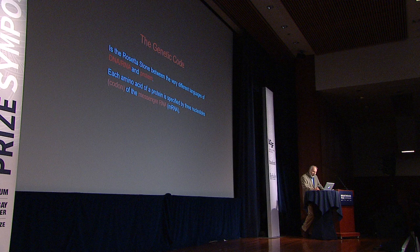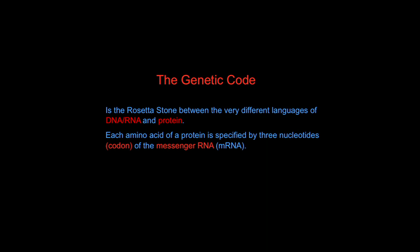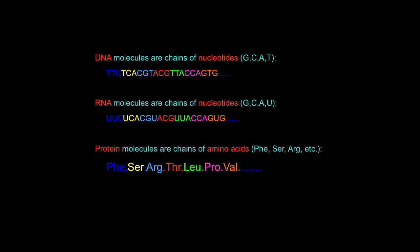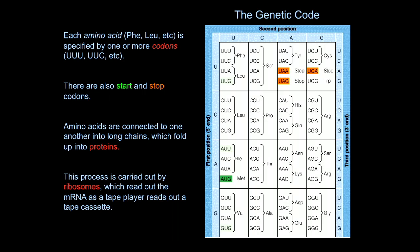Each amino acid in the protein is determined by a codon in the messenger RNA, which is transcribed from the gene in the DNA. Each codon specifies an amino acid in the protein via the genetic code. There are 64 codons, three of which are stop codons, and the other 61 specify different amino acids.